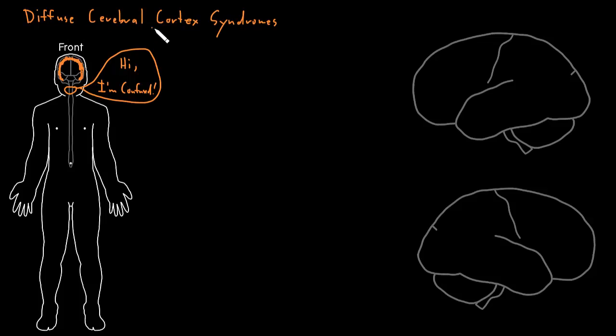Now there are a few other names that get attached to this. One common name is encephalopathy, which is a very nonspecific term. The word roots just mean brain dysfunction, which is true because this is actually brain dysfunction. It's hard to be a lot more specific than that.